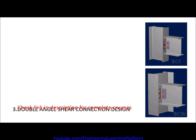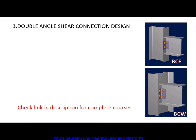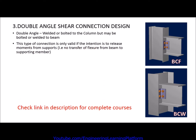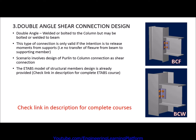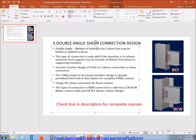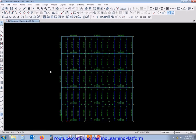This is the third tutorial for steel connection design. In this video, we will be designing a double angle shear connection. The double angle can be welded or bolted to the column, but may be bolted or welded to the beam. In this type of connection, the only intention is to transfer the shear force from the supports. The connection type in RAM Connection is referred to as DA-BCW or DA-BCF, based on beam-column-web or beam-column-flange connection.